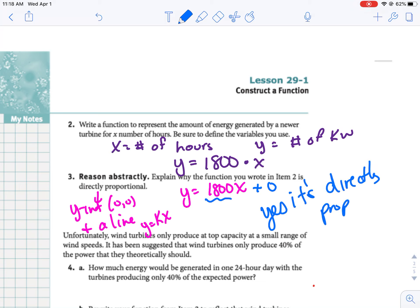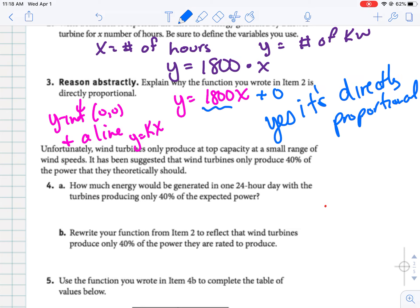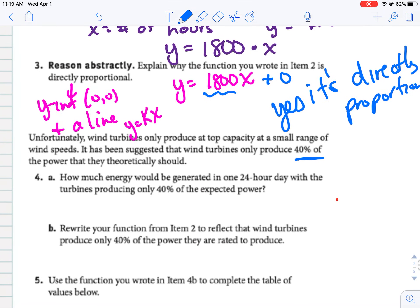All right, so the next one says, unfortunately, wind turbines only produce top capacity at a small range of wind speeds. So it says that they produce about 40% of the power that they should. What we're going to do is take that number from example one. We said in one day, it creates 43,200. We know that 40% is the same as 0.40, so we're going to multiply that by 0.40, and that gives us 17,280 kilowatts. But that's in 24 hours, so that's in a full day.